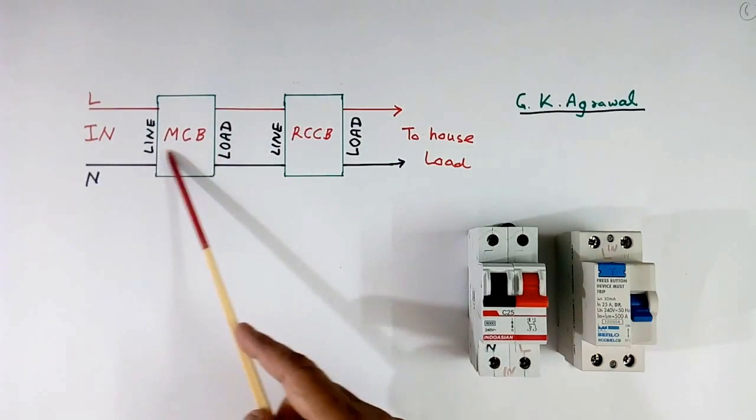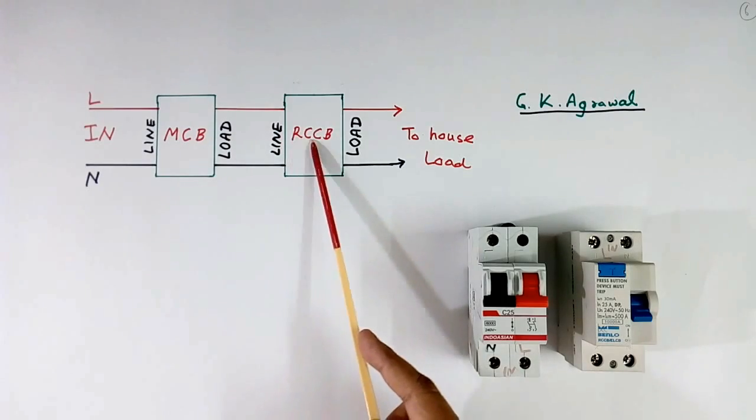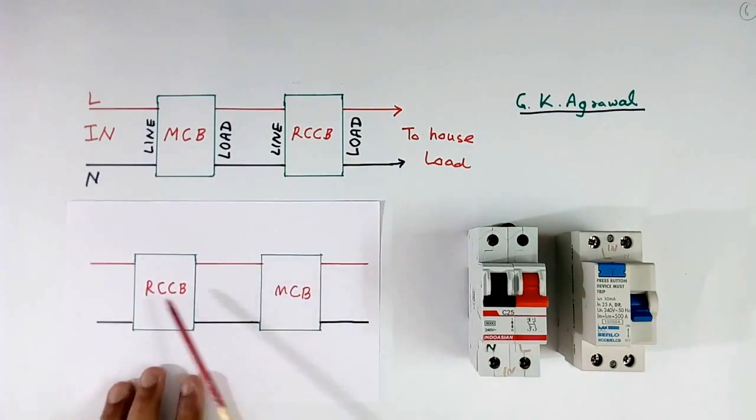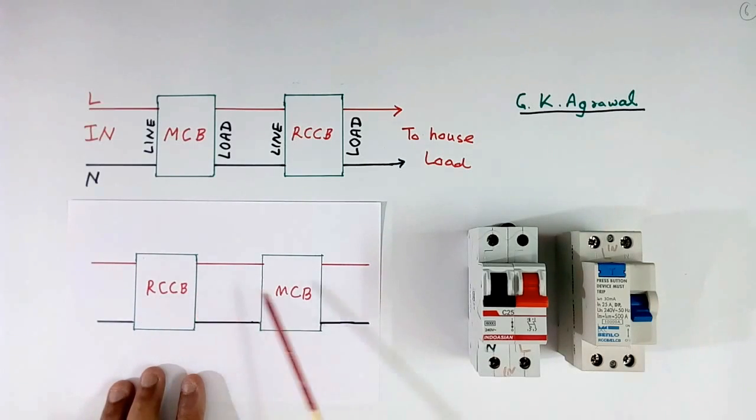Here I have connected MCB first, RCCB afterwards. Suppose we do other way. We connect RCCB here and then MCB. Then what is the difference?